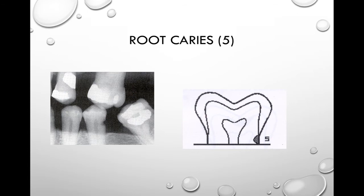Class five is root caries, which is more common in elderly patients. It is found just apical to the CEJ and can often be seen clinically. Root caries appears like a crater on a radiograph — very distinct, almost as if an ice cream scoop removed a portion of the tooth. It is often associated with periodontal disease, seen in areas with recession or bone destruction. On this radiograph, you can see a very distinct scooped-out area indicating root caries, along with an existing class five restoration from past treatment.